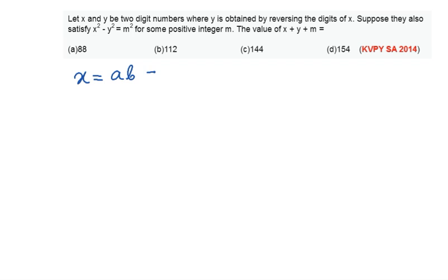In the decimal format the same number will be written as 10a + b where a and b are the single digit whole numbers. And y will be the number obtained by reversing the digits. So y can be taken as ba. So in the decimal format it will be 10b + a.